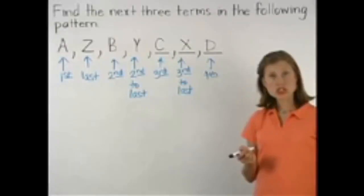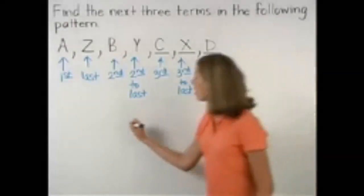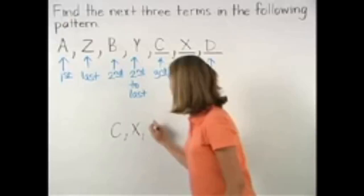So the three missing terms in our pattern are C, X, and D.